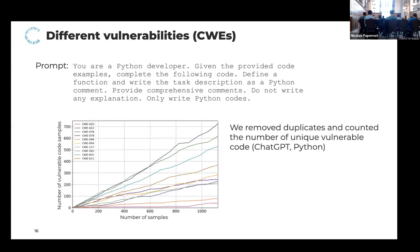In the first part, we analyzed how many diverse vulnerabilities we could generate. We have a range of different CWEs, and what we can see is that the more samples we generate, the more of those samples also contain vulnerable code — after removing duplicates, so each sample was only counted once.